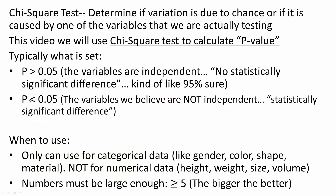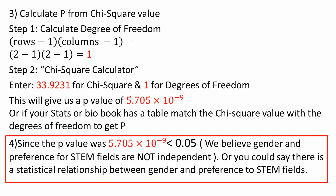Since p is less than 0.05, we say the variables are not independent — statistically significant difference. In our case, this value is less than 0.05, so we believe gender and preference for STEM fields are not independent, or there is a statistical relationship between gender and preference for STEM fields. That's pretty much it for chi-square test using p-value. In the next video, I will use chi-square test using critical value.